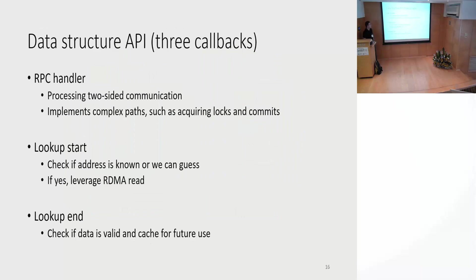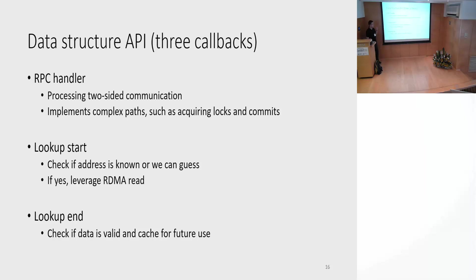How is this achieved? The data plane talks to the data structure through an interface consisting of three callbacks. The first callback is the RPC handler that handles all two-sided communication — you can do complex things such as acquiring locks and executing the commit phase. Then we have two more callbacks: one at the beginning to do a lookup and check if we know the address we'd like to read from, and one at the end to verify that the data is correct.